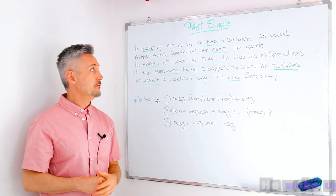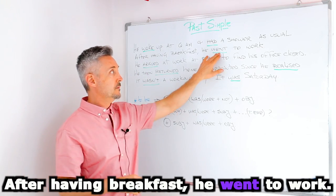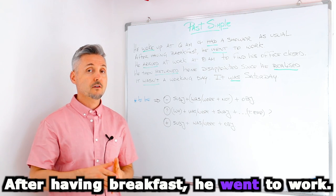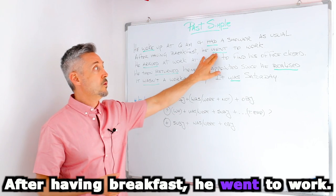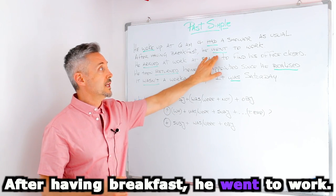Then after having breakfast, he went to work. I mentioned before, the verb to go is irregular. And the past is went. So he went to work.